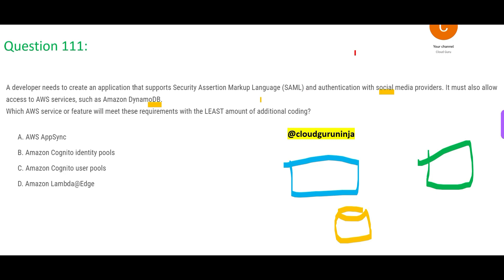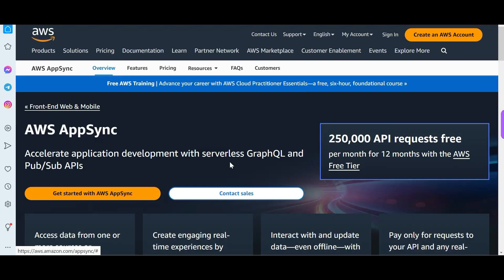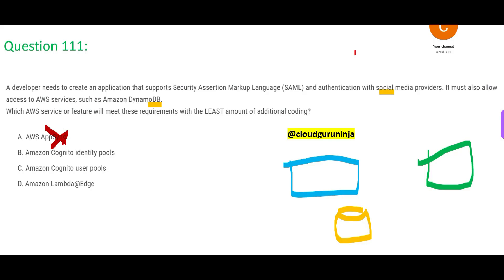So the answer has to be between B and C. AppSync is wrong here — when you are using GraphQL, DynamoDB is not a GraphQL database, it is a NoSQL database. Just a quick knowledge statement: the AWS database that supports GraphQL is AWS Neptune. So AppSync is wrong. Lambda Edge is also wrong here because why would we use Lambda for authentication? Lambda is used for light data massaging and serverless compute.